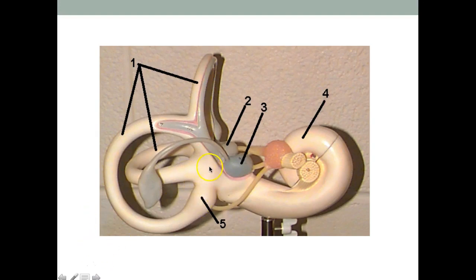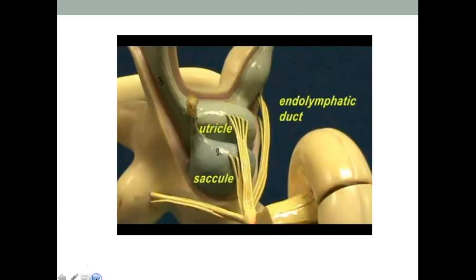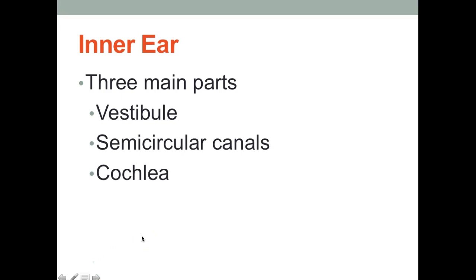On the model: the bony labyrinth is the white layer right here. The pink layer represents perilymph inside the bony labyrinth, and the gray area is the membranous labyrinth with endolymph inside it. Those were the layers of the labyrinth. Now let's talk about structures — we can divide the labyrinth into three main parts: the vestibule, the semicircular canals, and the cochlea.